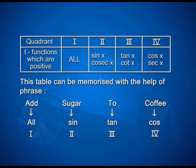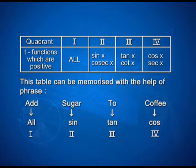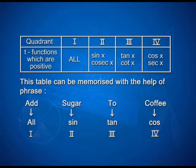This table can be memorized with the help of the phrase 'Add Sugar To Coffee.' The first letter of 'Add' stands for All — all trigonometric functions sin x, cos x, tan x, cosec x, sec x and cot x are positive in the first quadrant. 'Sugar' — S stands for sin and its reciprocal cosec, which are positive in the second quadrant. 'To' stands for tan and its reciprocal cot, positive in the third quadrant. 'Coffee' indicates cos and its reciprocal sec, positive in the fourth quadrant.